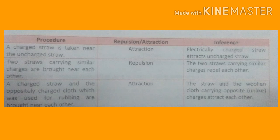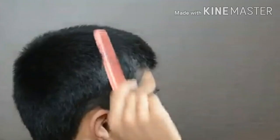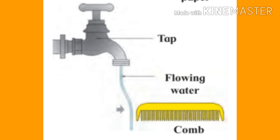Students, fill in the table given in the textbook page number 53. Now we will see another activity: rub a comb or a balloon on your hair as shown in the picture, then take the comb near a thin trickle of water from a tap. See what happens — when the charged comb is brought close to the flowing water, the water gets attracted.